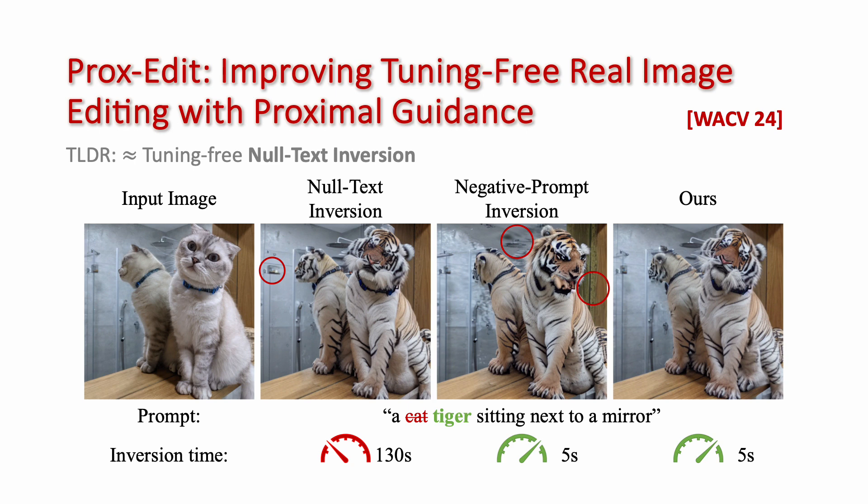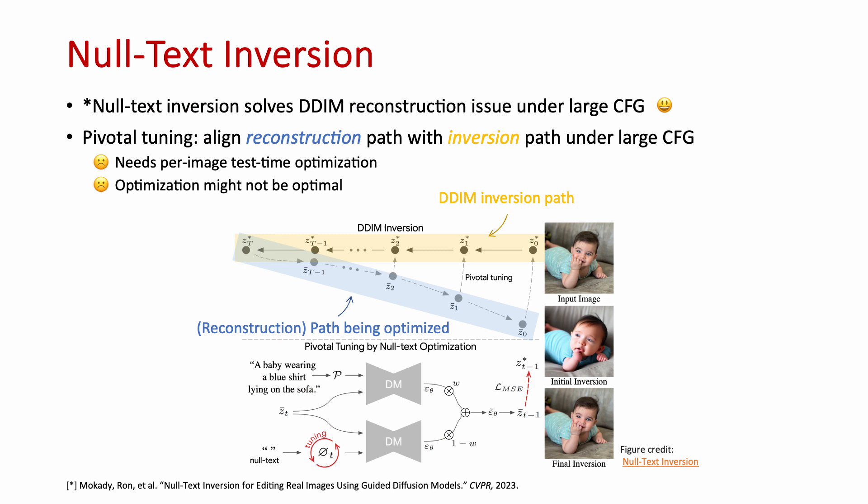We introduce proximal guidance for real image editing. We can roughly think of it as a tuning-free, null-text inversion, and potentially has better background preservation.